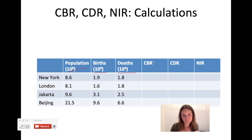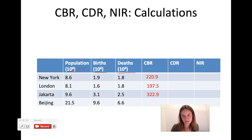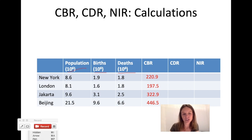For crude birth rate, take the number of births, divide by the total population, and multiply by 1,000. Take a minute to try those calculations on your own. For New York City the crude birth rate is 220.9; for London it's 197.5; for Jakarta it's 322.9; and for Beijing it's 446.5. You can clearly see which population is having the most births per thousand people — that's obviously Beijing.